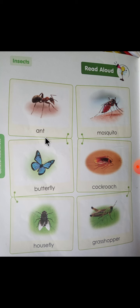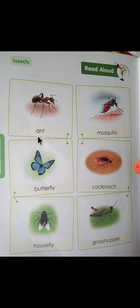First, Ant. आपने इसको घरों में देखा होगा — जब भी कोई मीठी चीज़ गिर जाती है, या चीनी गिर जाती है, तो ये Ant वहाँ पहुँच जाती है। ये बहुत common insect है जिसको आप daily घर पर देखते हैं। A-N-T, Ant.